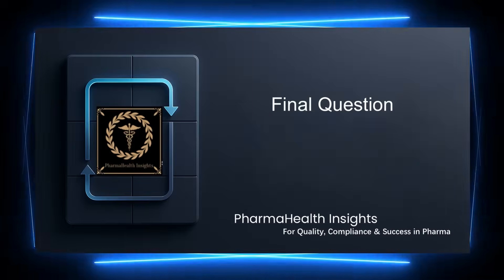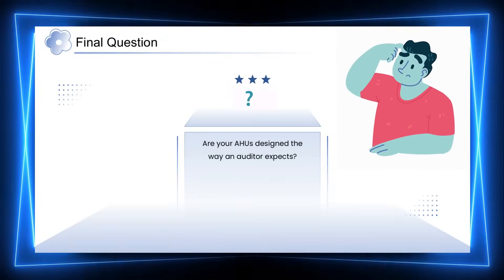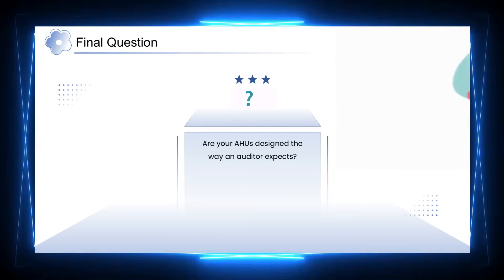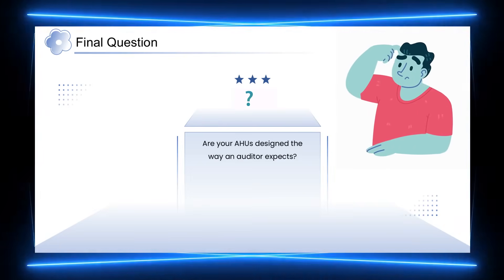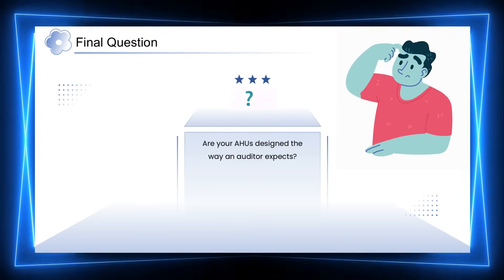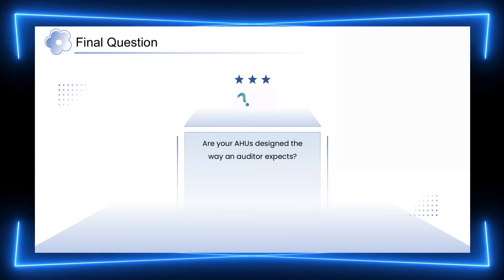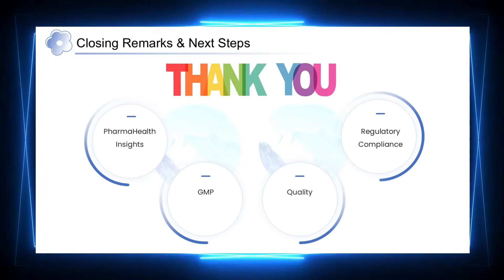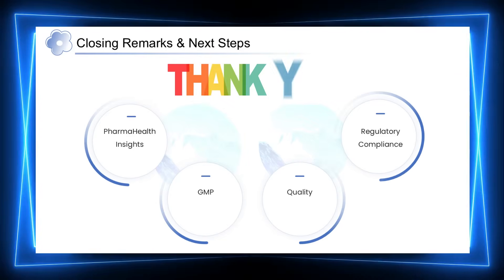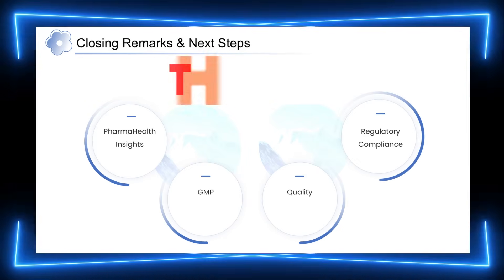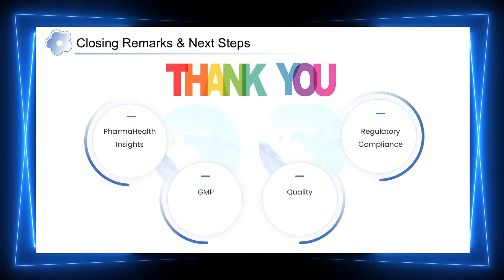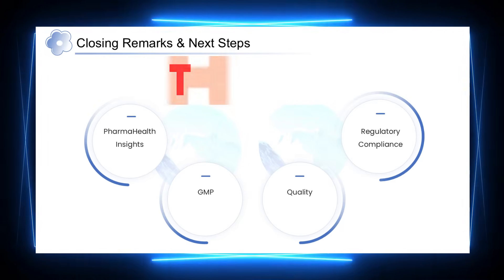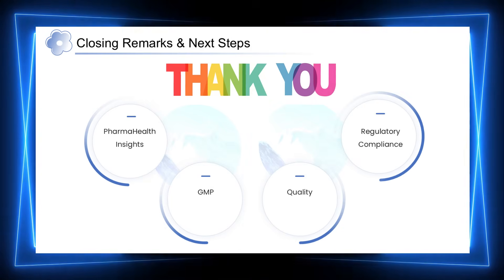As we conclude, this is the most important question every pharmaceutical facility should reflect on — not during an audit, but before one. Are your AHUs designed with a clear GMP rationale? Is the logic behind zoning, airflow, and pressure clearly defined and documented? And most importantly, can your team confidently explain this logic to an auditor? Answering these questions honestly can make a significant difference during inspections. The intention of this discussion was not just to explain the difference between AHU and HVAC, but to highlight how this understanding directly influences GMP compliance and audit outcomes. In my experience at Pharma Health Insights, most AHU-related issues do not arise from lack of effort, but from early design assumptions and gaps in documented logic. When AHU philosophy is reviewed early and aligned with regulatory expectations, compliance becomes a built-in feature rather than a corrective exercise.